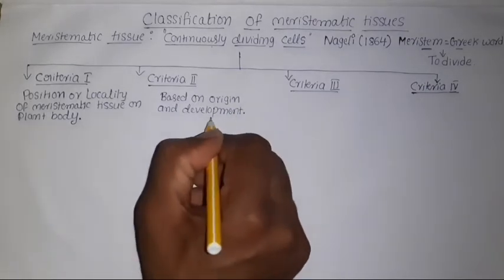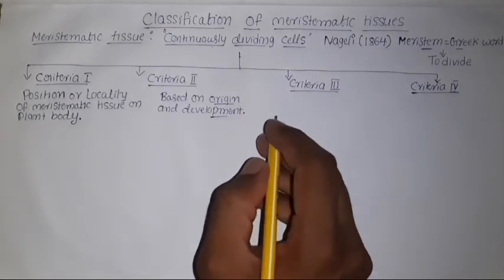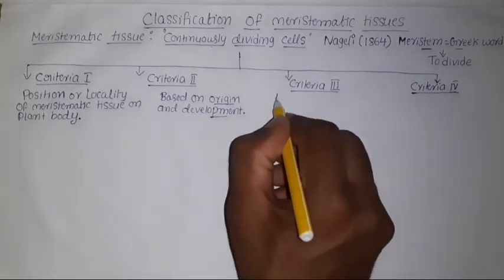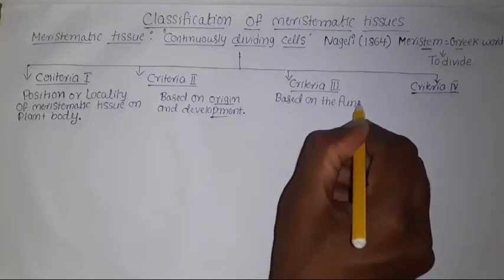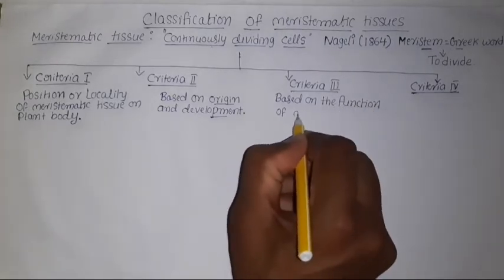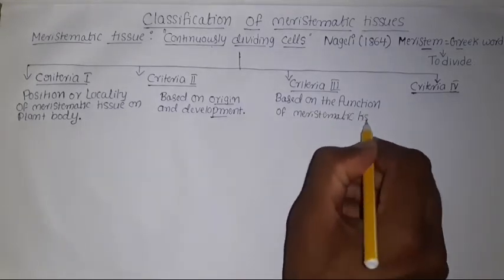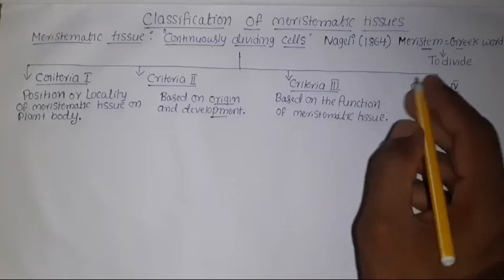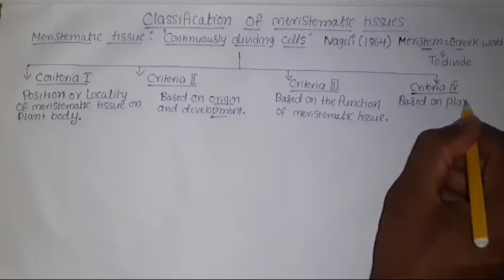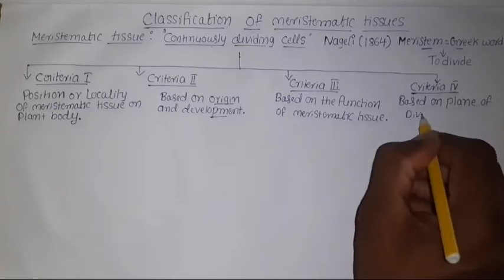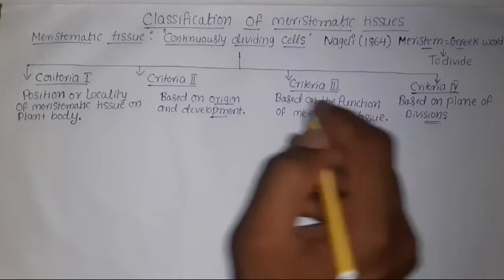The third criteria is based on the function of meristematic tissues — based on function, we have different types. The fourth criteria is based on the plane of cell divisions, and based on this criteria we also have different types.